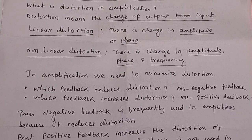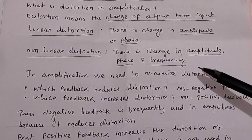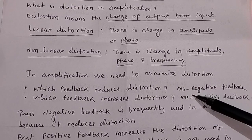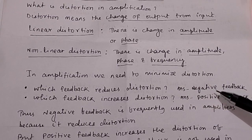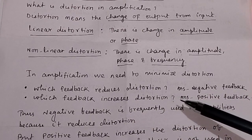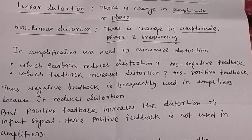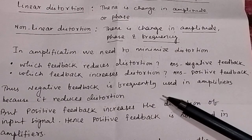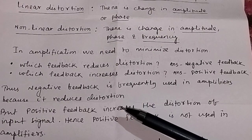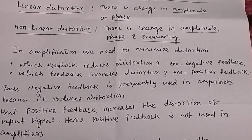In transistor amplifiers we need to minimize distortion. Which feedback reduces distortion? The answer is negative feedback — negative feedback reduces distortion. Which feedback increases distortion? Positive feedback increases distortion. Negative feedback is frequently used in amplifiers because it reduces distortion, but positive feedback increases distortion of the input signal. Hence positive feedback is not used in amplifiers.